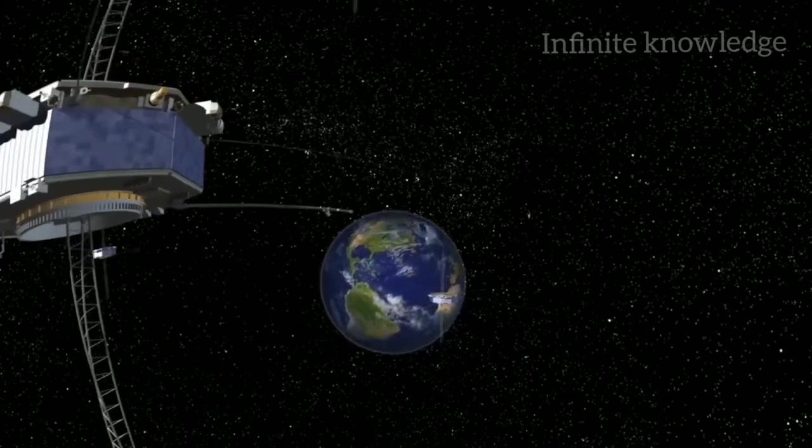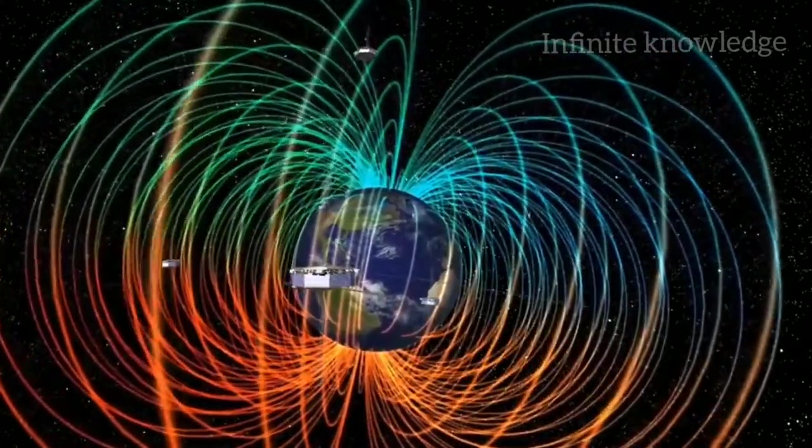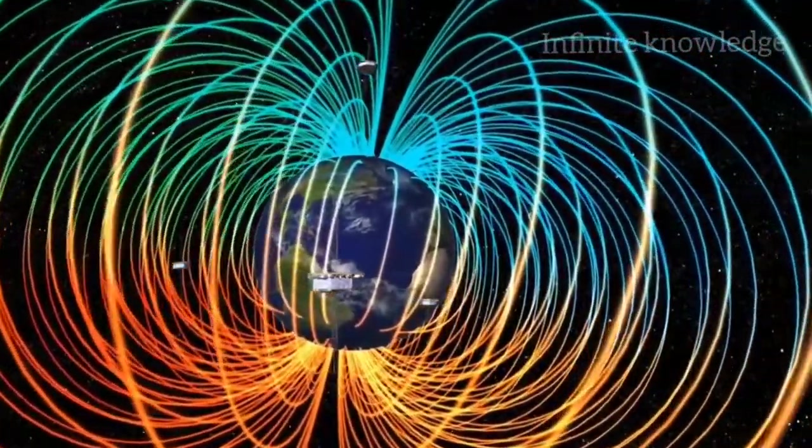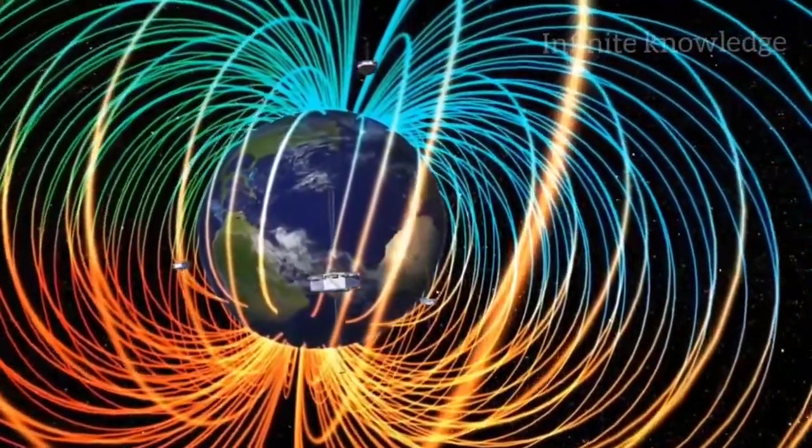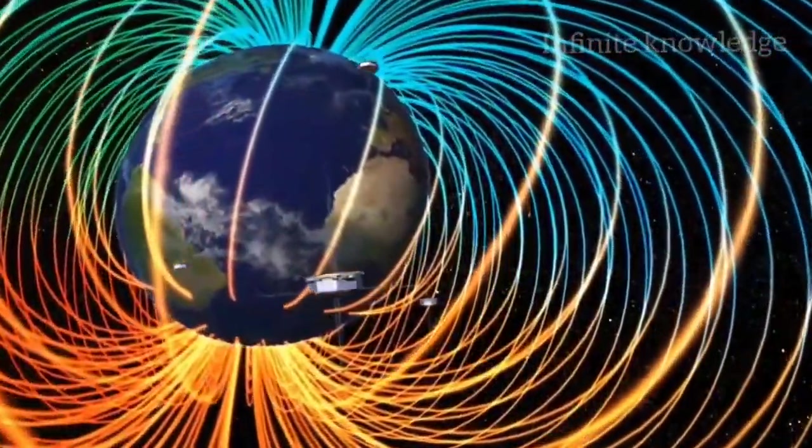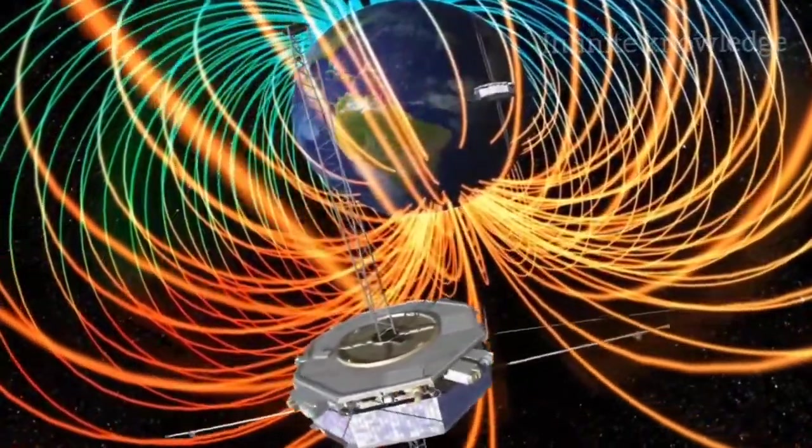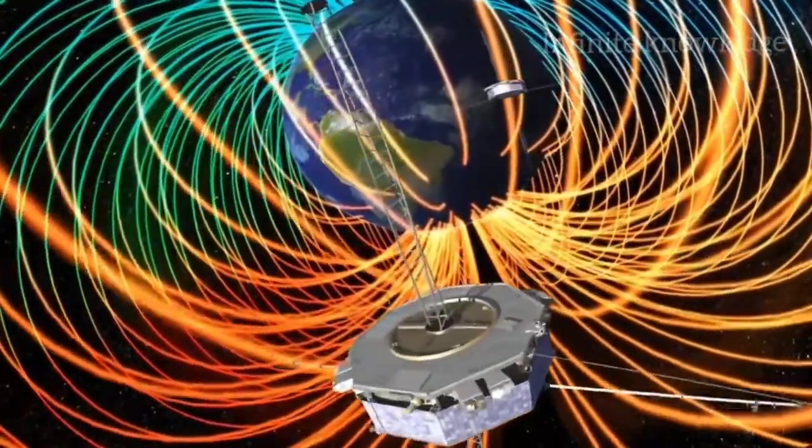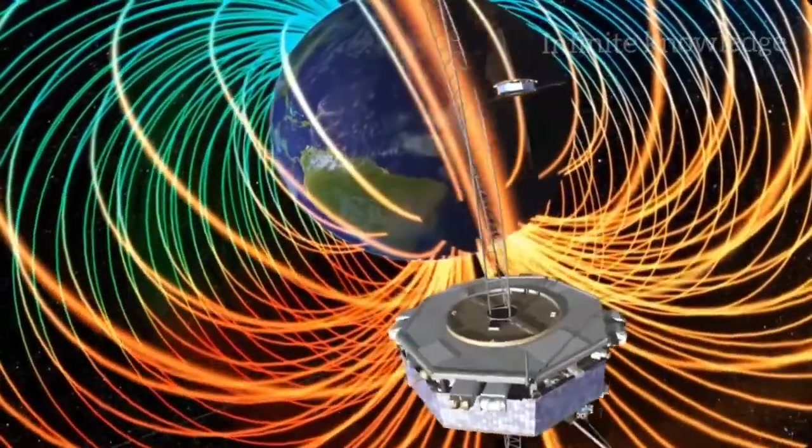The MMS spacecraft traveled directly through magnetic reconnection sites. Reconnection occurs when magnetic field lines annihilate each other and release a gigantic burst of energy. This fundamental process taps energy stored in the magnetic field and converts it into fast-moving charged particles. The MMS orbit was designed to fly precisely in the places where reconnection occurs.